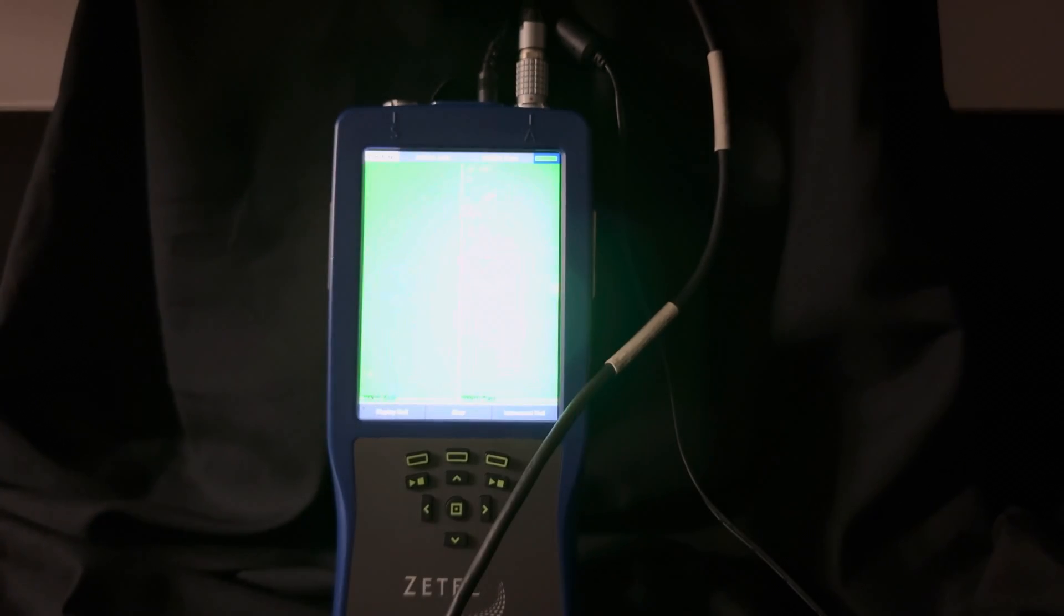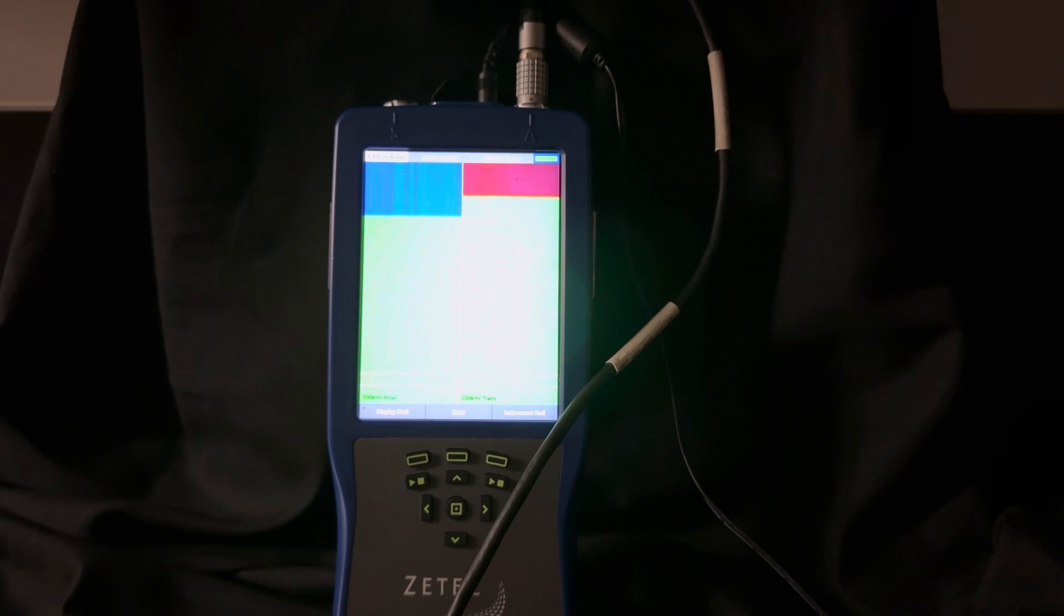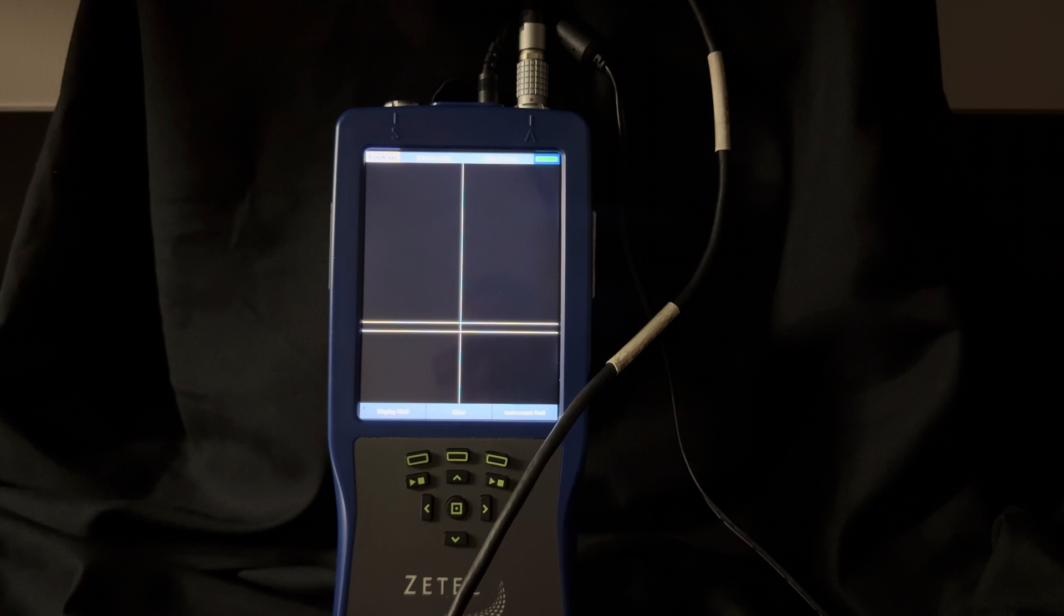I'm going to take and just place the array probe down in the good material next to my fastener and we hit instrument null just to make sure we're nice and sensitive.